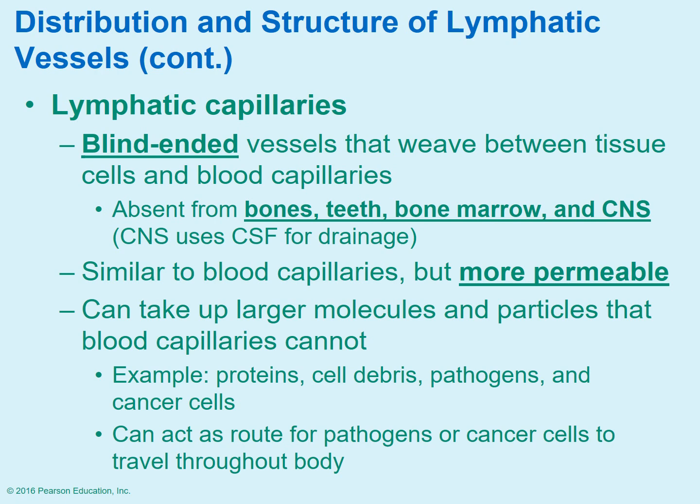The central nervous system, instead of lymph, is going to use cerebrospinal fluid for draining. The lymphatic capillaries are very similar to blood capillaries; however, they're more permeable. So it's easier to uptake larger molecules and particles that would not easily flow back into the blood.